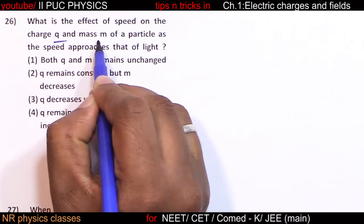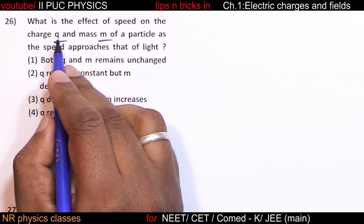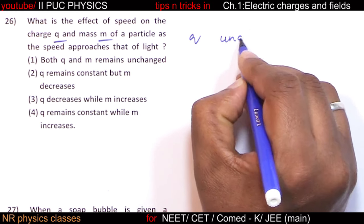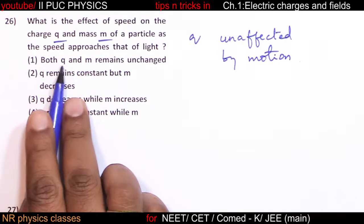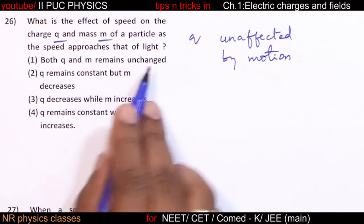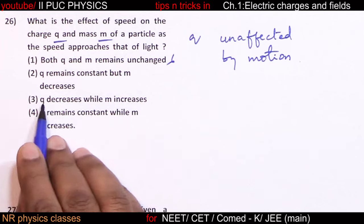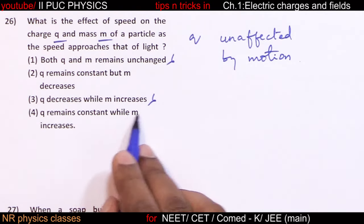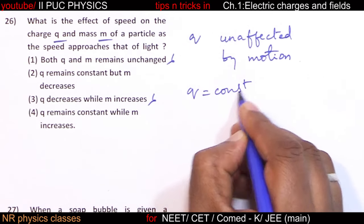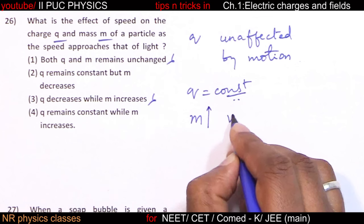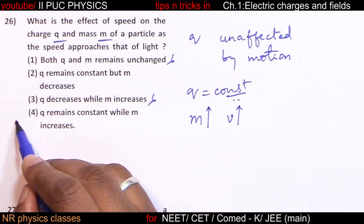As the speed of a particle approaches that of light, charge is unaffected by motion and remains constant. However, mass increases with speed. Therefore, charge remains constant while mass increases.